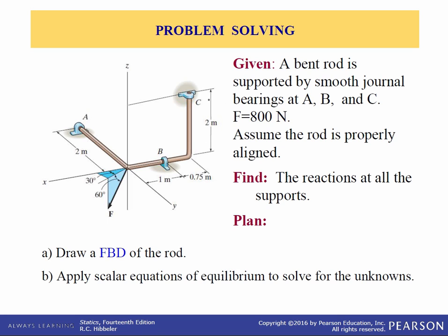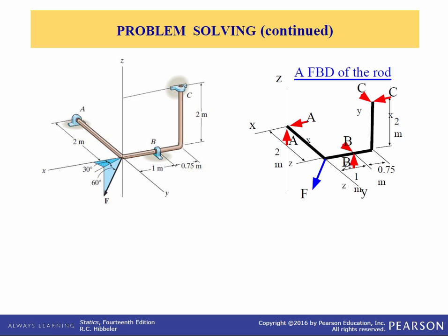Another example: a bent rod supported by smooth journal bearings at A, B, and C, with an applied load of 800 newtons. We're given angles and will use the projection technique to break the force into components — first into a Z component, then into a vector in the XY plane, and then into X and Y components. Note that none of the journal bearings have any moments associated with them because the system is constrained enough that no moments are necessary to support it.